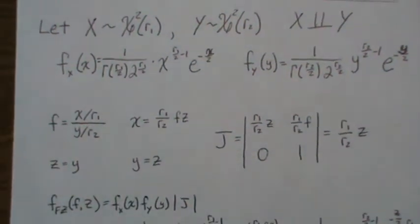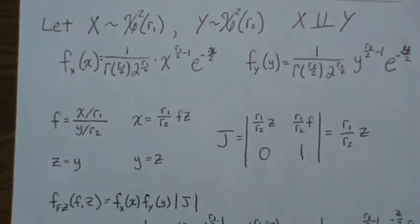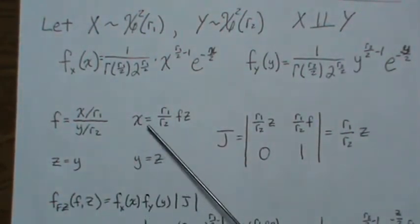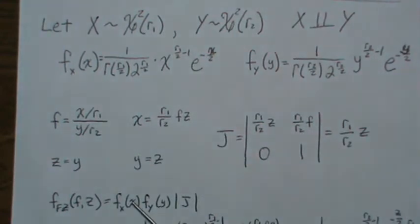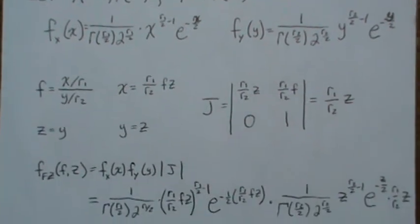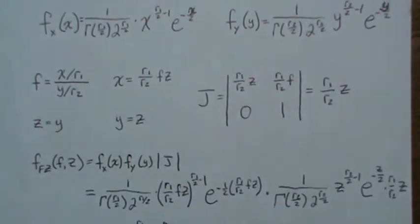The joint density of f and z is given by this equation, which is the product of the individual densities because x and y are independent. We then plug in the expression for x and the expression for y into these equations.